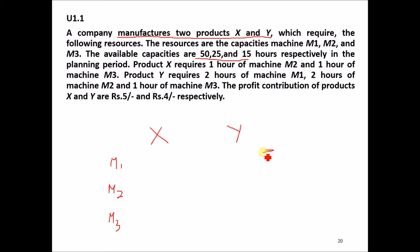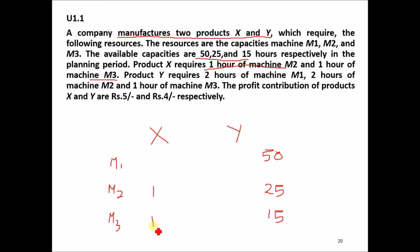The available capacities are written on the right-hand side: 50, 25, and 15. In some problems, these may be labeled as maximum or minimum availability. Product X requires 1 hour of machine M2 and 1 hour of machine M3, so we enter those values. Where a value is not given, we take it as 0.